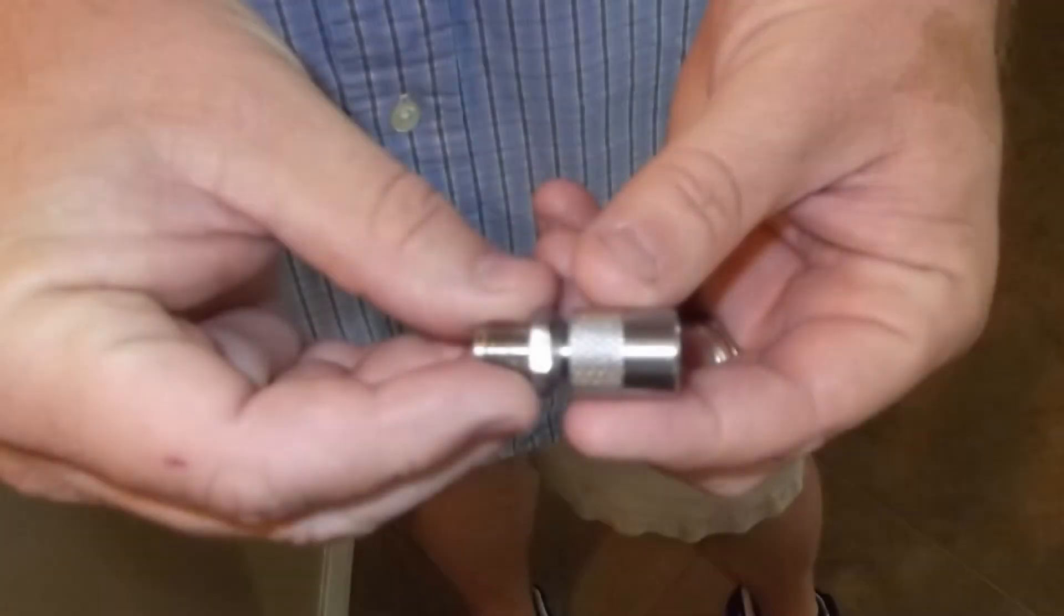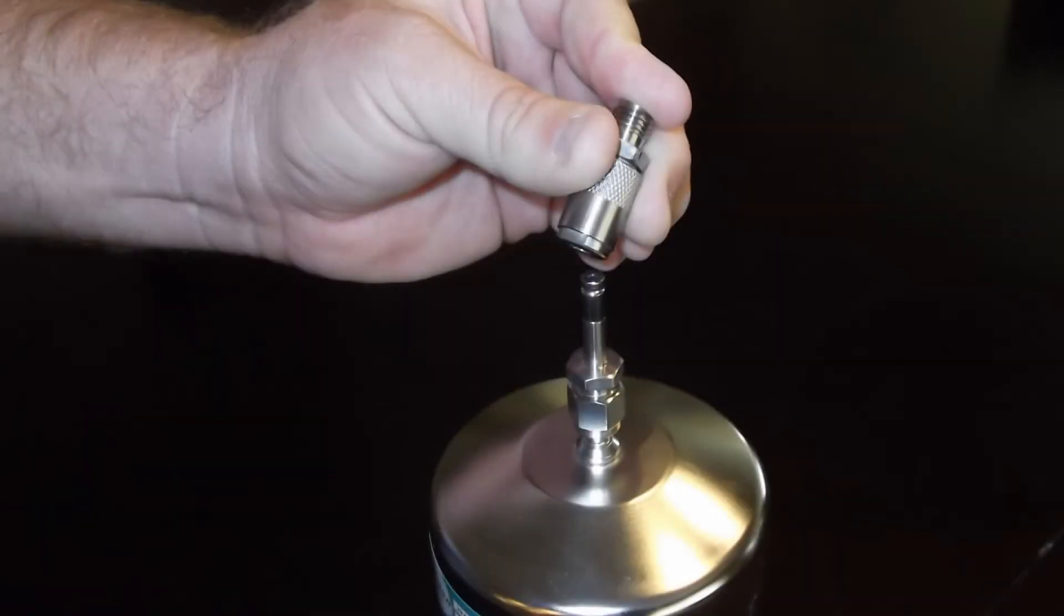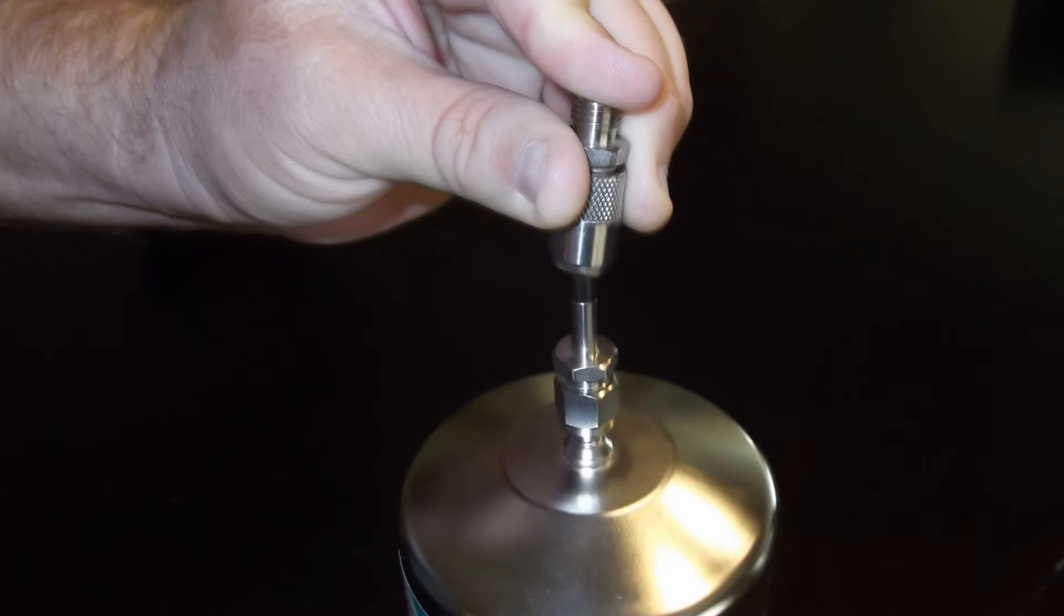Take the grab sample adapter and push the outer metal sleeve towards the nut. While holding the metal sleeve against the nut, place the grab sample adapter onto the minican and release the sleeve.